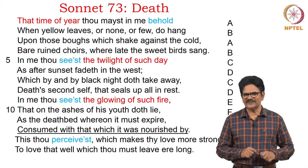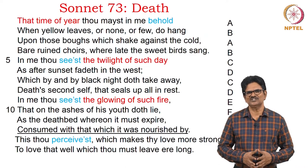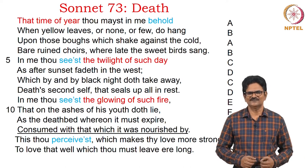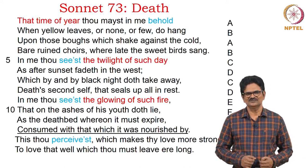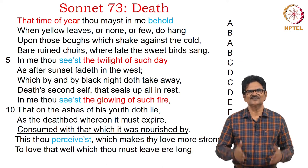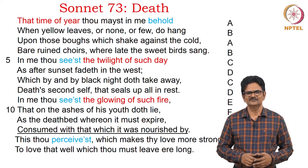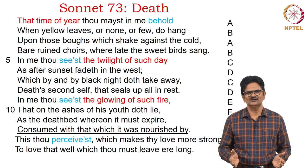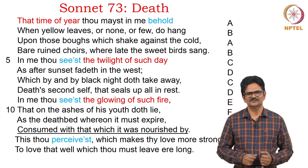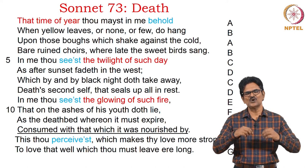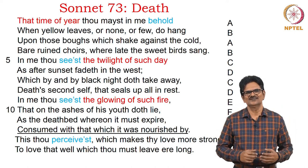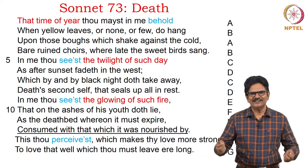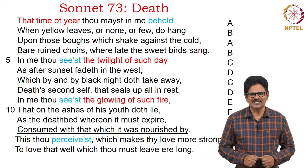We have three specific examples of sonnets from Shakespeare to discuss in detail. One of the sonnets for discussion is Sonnet 73 — it's a very profound poem on the march of death. All of us grow young and old — to what? To die, to death. Let's read Sonnet 73 now.